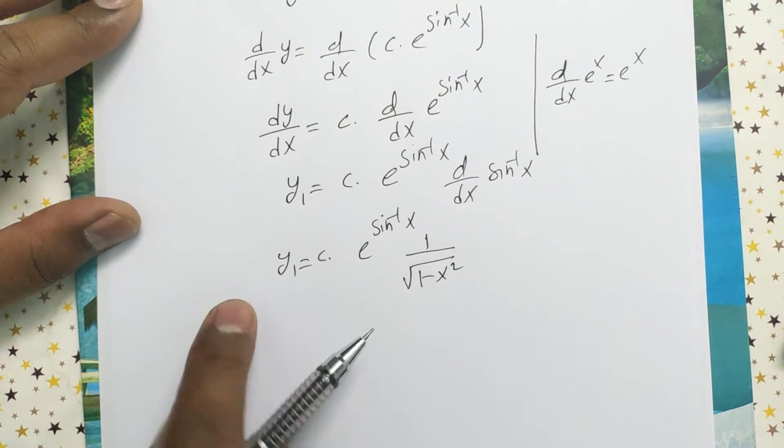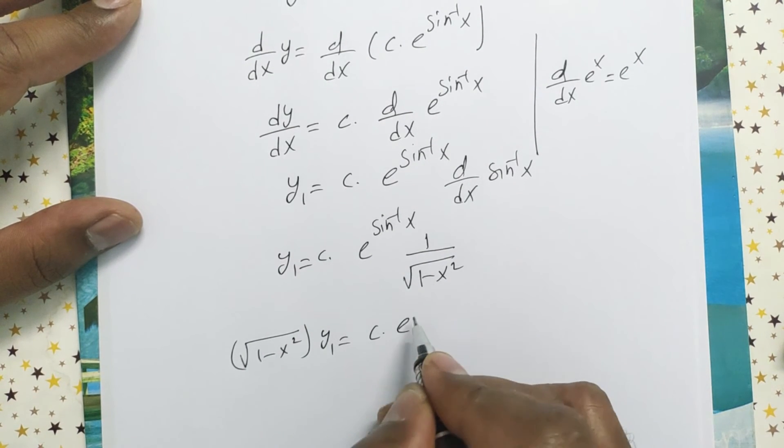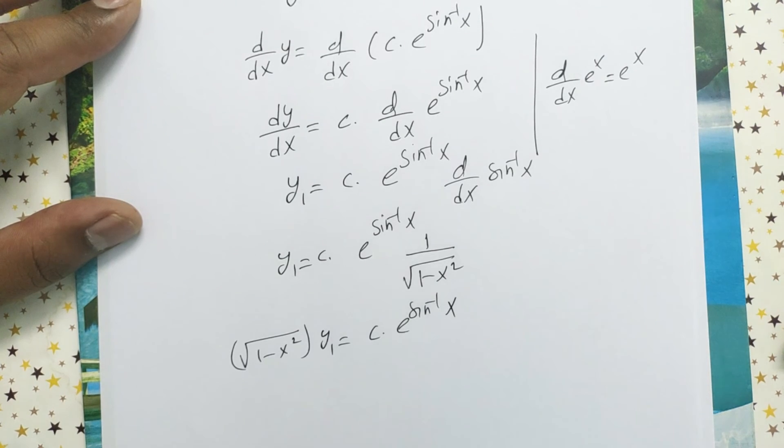Now bring this one to the left side. Then it becomes root of 1 minus x square times y1 equals c times e to the power sine inverse x.